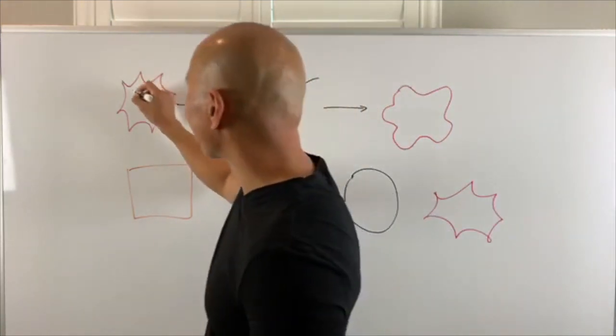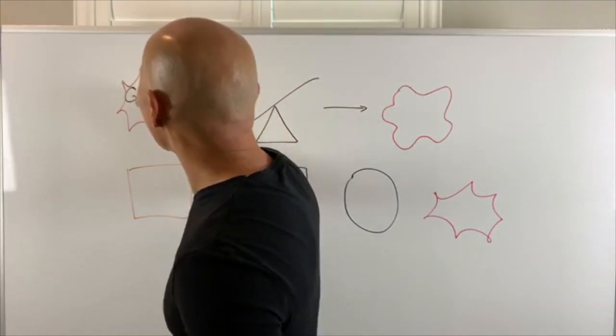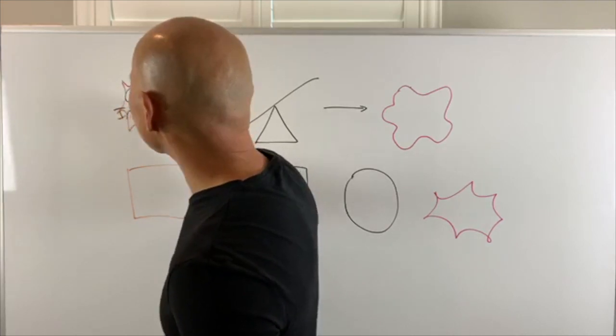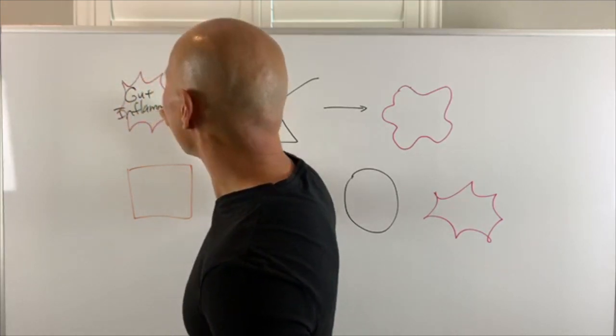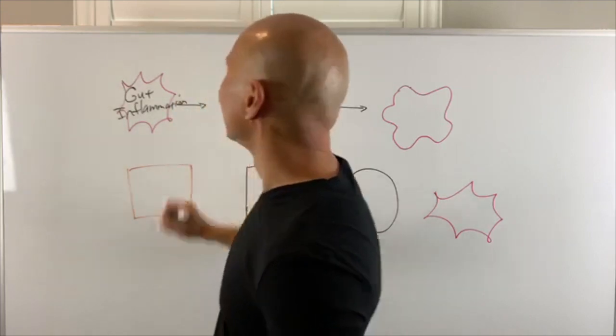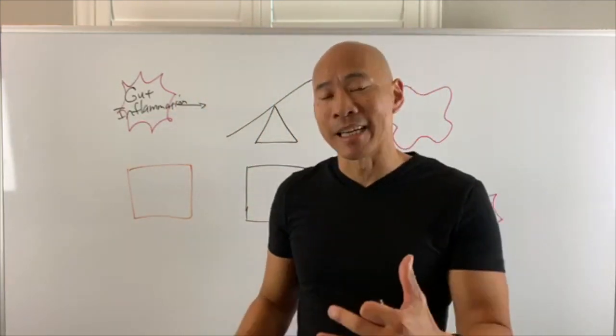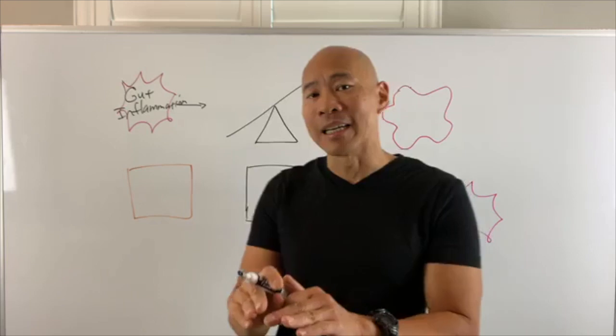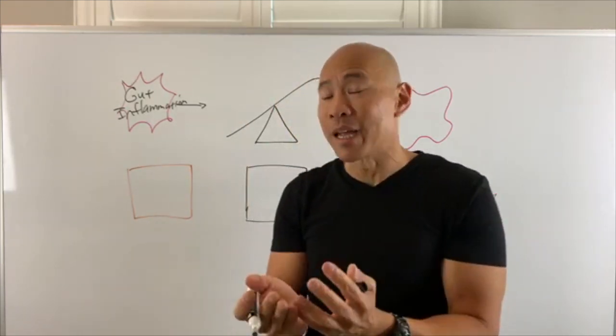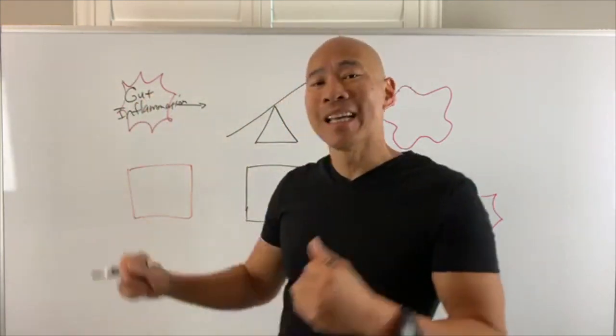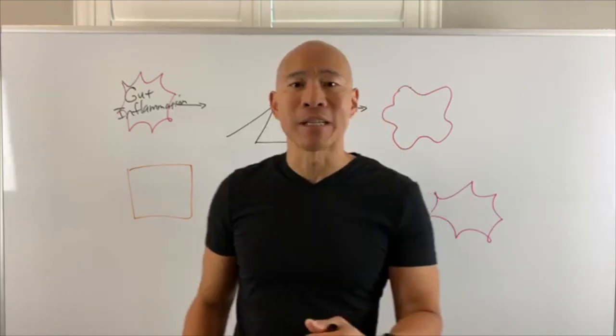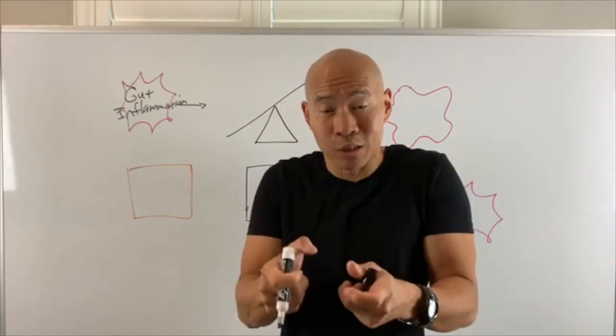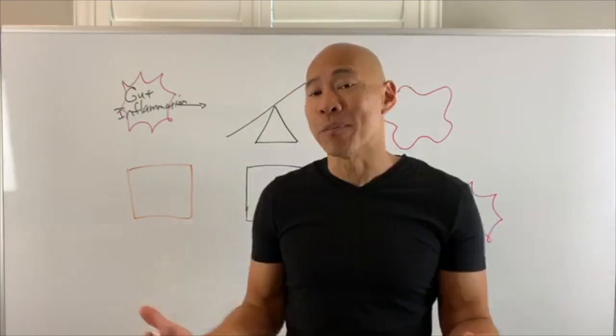So here, we have gut inflammation. Gut inflammation meaning that your gut lining is inflamed. Now, the gut lining is only one cell layer thick, and it generates its own inflammatory cytokines. Cytokines are immune messengers or text messages sent by your immune system to tell your body that you're inflamed.